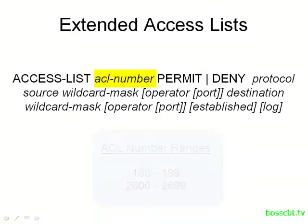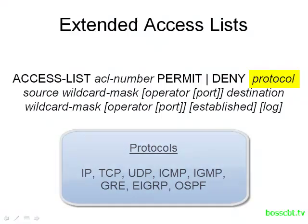We still have the permit and deny statements — nothing new there. So far this looks pretty much like the standard access list except for the number ranges. Then we get into our first new parameter: the protocol. Here we have to specify a particular protocol, and this can be IP, TCP, UDP, or ICMP. There are several more as well.